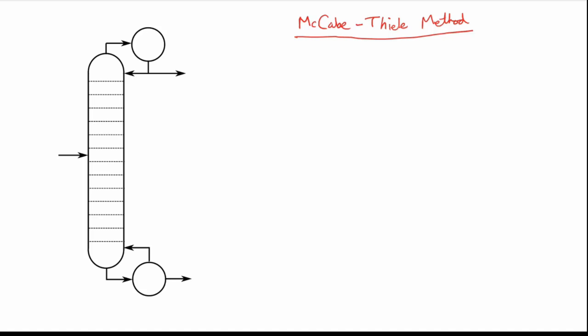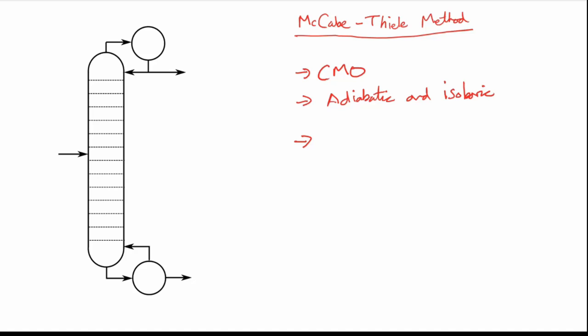In this video we're going to recap the McCabe-Thiele method for looking at binary distillation columns. When we use the McCabe-Thiele method, there are some key assumptions: the first is constant molar overflow, meaning the vapor and liquid flows between the trays are the same. We also assume adiabatic and isobaric operation, so no heat losses and constant pressure across the column. Our final assumption is parallel enthalpy lines, meaning the saturated liquid and saturated vapor enthalpy curves are parallel, giving a constant enthalpy of vaporization along the column.